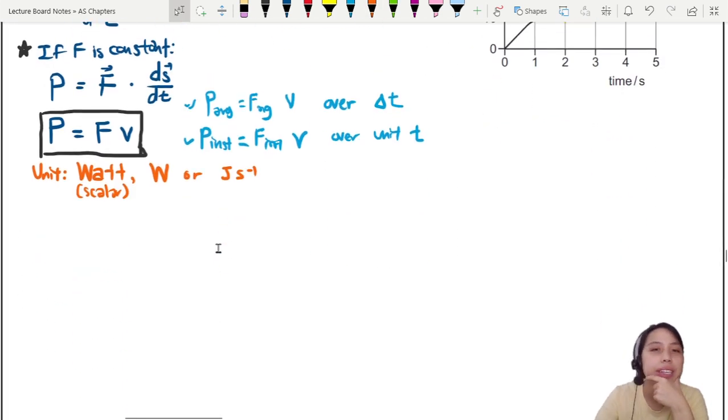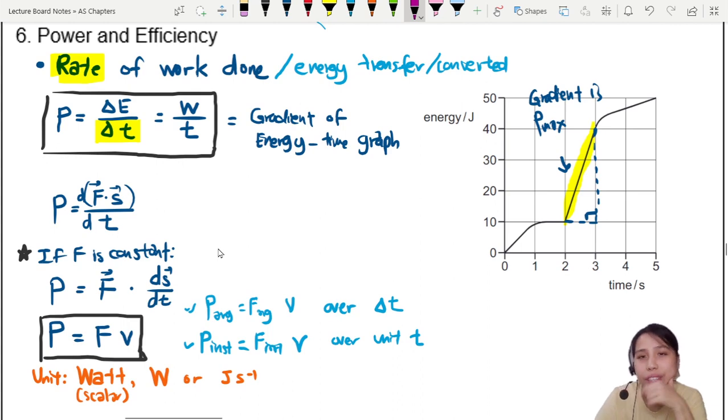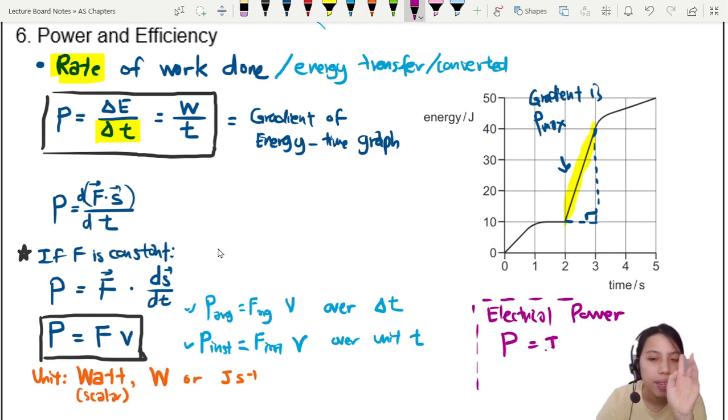We will learn this a little bit more later. But specifically for electrical energy, there's a special power equation. So I'm going to write it down as well, because you will encounter it in the past papers a little bit. So note, side note. For electrical power, we have a special series of equations. But the very first one that you will need to know for now is P, power, equals to two things. Current times voltage. This is current. This is voltage.